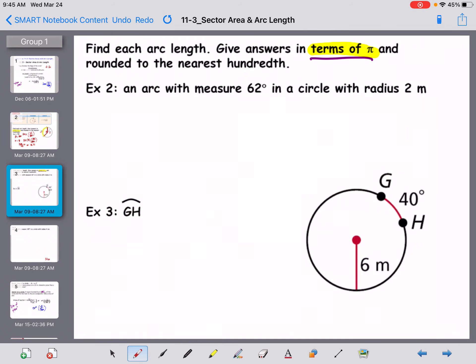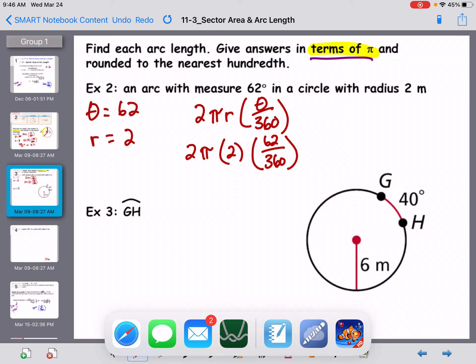Here's another example. Find each arc length. Give answers in terms of pi, and round it to the nearest hundredth. So an arc with measure 62 and a circle with radius 2 meters. So I need theta, which is 62. I need the radius, which is 2. My formula, 2 pi r, theta, 360. So 2 pi, r is 2, the measure of the angle is 62, that's theta, and then 360 at the bottom.